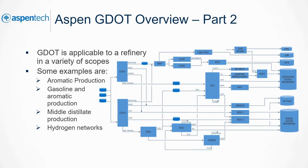GDOT can be applied to many combinations of unit operations to optimize the production of specific products of a refinery, such as aromatics, gasoline, and middle distillate products. GDOT can also be used to optimize hydrogen networks.